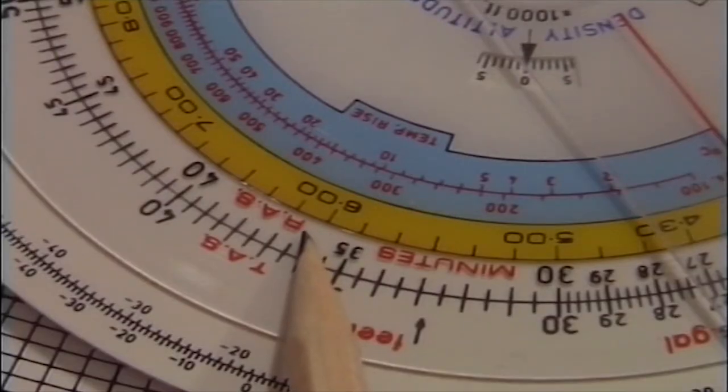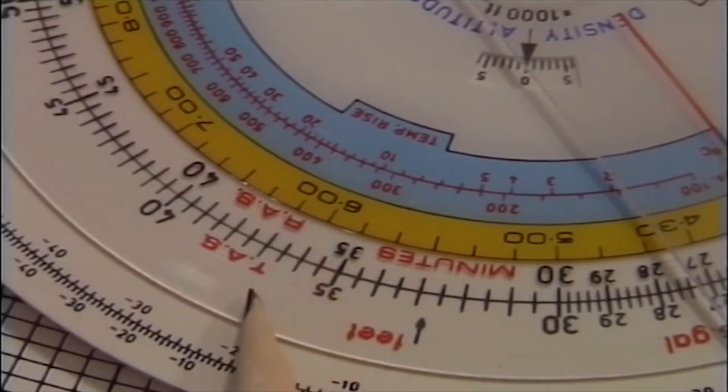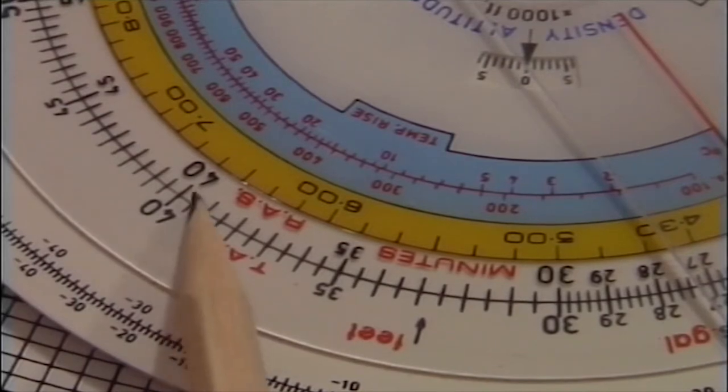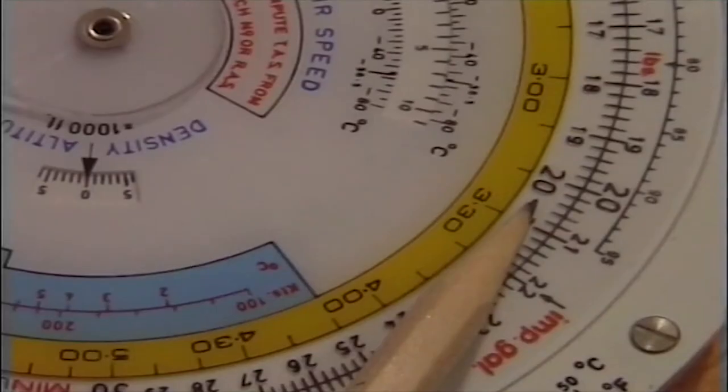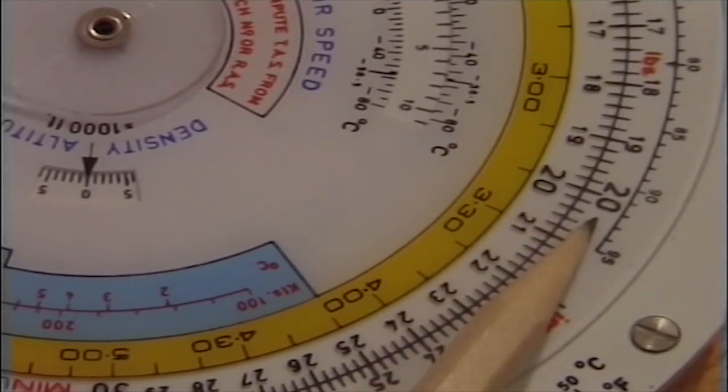If we now look at the indicated altitude on the inner scale and the true altitude on the outer scale, at say for example 4,000 feet, we find that in the ISA atmosphere they are the same. At 20,000 feet there is also no difference between indicated and true altitude in the ISA atmosphere.